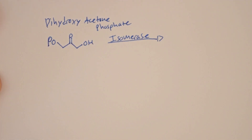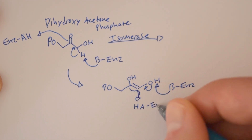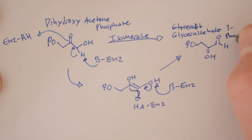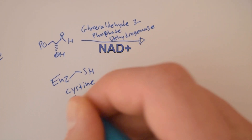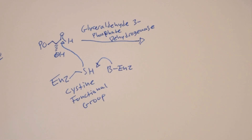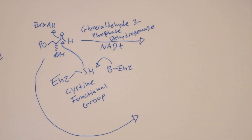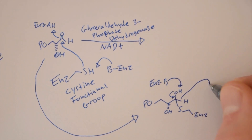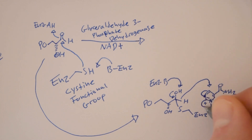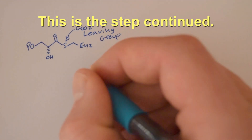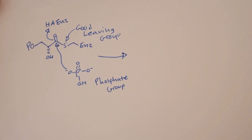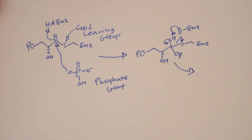The enzyme isomerase takes the dihydroxyacetone phosphate and converts it to another glyceraldehyde 3-phosphate. So now we have two, and everything after this point is happening twice. Next, the glyceraldehyde 3-phosphate interacts with the enzyme glyceraldehyde 3-phosphate dehydrogenase and NAD+. The enzyme has a side chain of cysteine that is bonded to the molecule, and after several steps we end up with NADH and 1,3-bisphosphoglycerate.